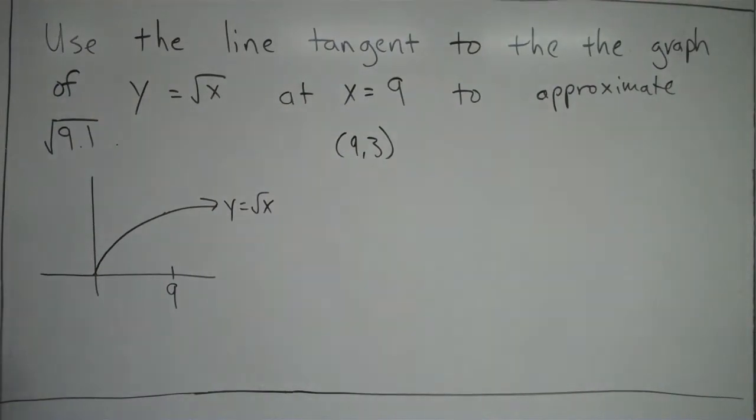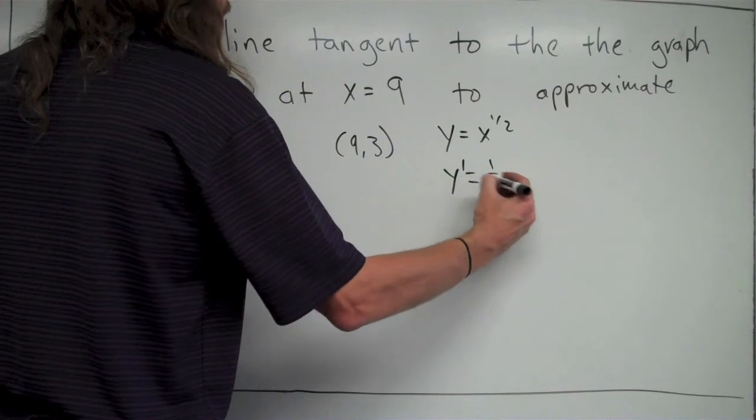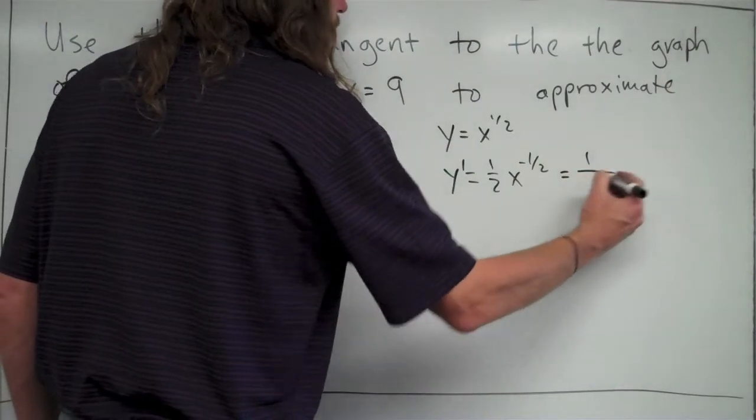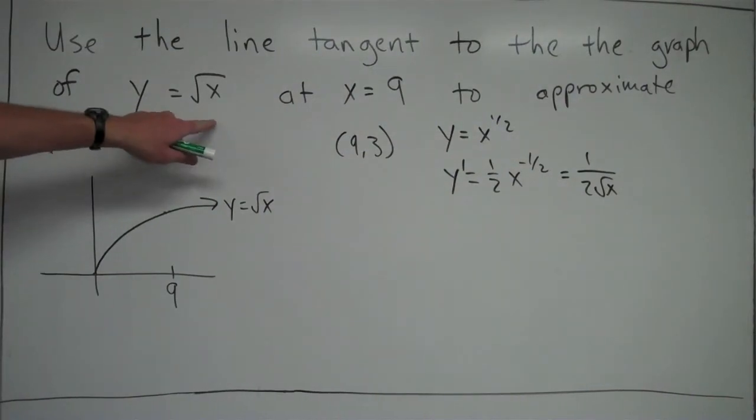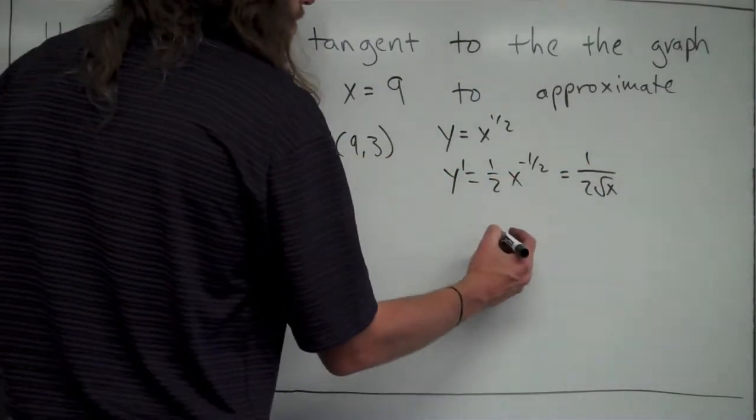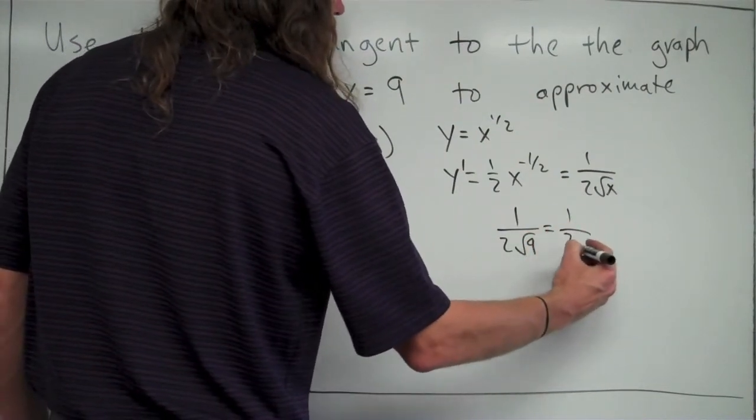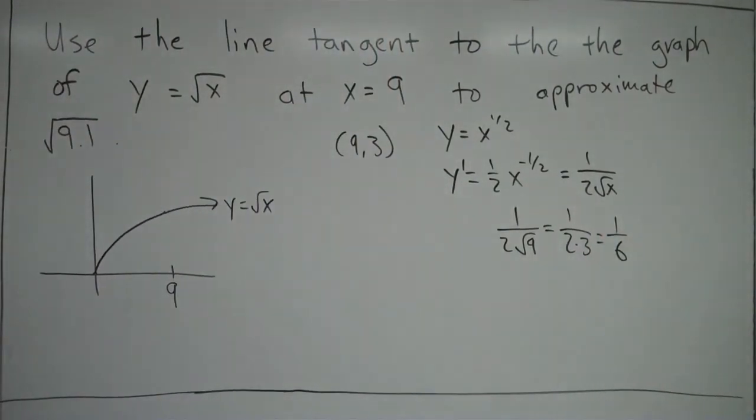In order to come up with a slope, I need to take the derivative of my function. I'll rewrite it as y = x^(1/2). When I take the derivative of that, it becomes (1/2)x^(-1/2), which I can rewrite as 1/(2√x). That's the derivative of √x. Now, I want the slope at x = 9, so I'm going to take 9 and plug it into my derivative. I'll end up getting 1/(2√9), which simplifies to 1/(2·3) = 1/6.